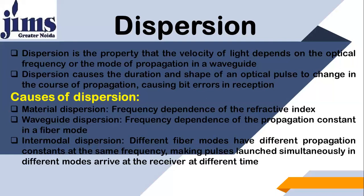The third type is intermodal dispersion, which we had already discussed in previous video lectures. Different fiber modes have different propagation constants at the same frequency. Every wave has its own propagation constant, which is a complex summation of phase constant and attenuation constant. Different fiber modes have different propagation constants at the same frequency, making pulses launched simultaneously in different modes arrive at the receiver at different times.